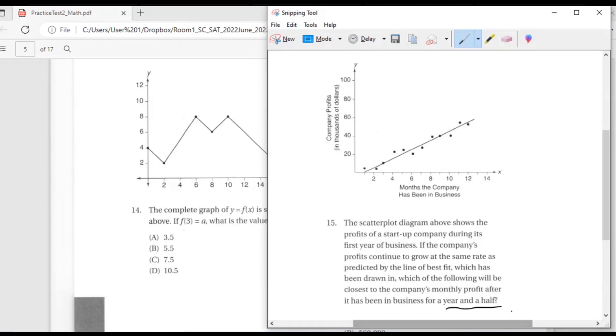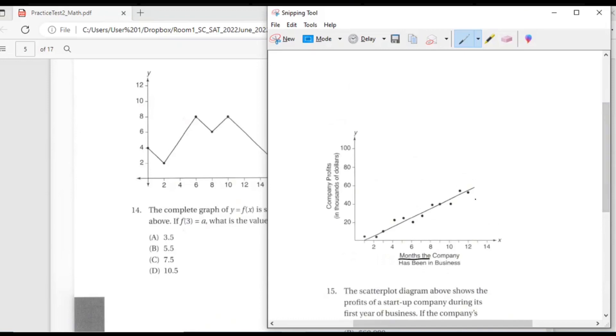Year and a half means how many months? 18 months, right? But in the graph, how many months of data are we given? Only 12 months. That means we have to predict the future when x equals 18. So we need to come up with the equation of a line and then substitute x equals 18 to figure out the corresponding y. Whenever you have a scatter plot like this, pay attention—this is a common SAT type of question where you're given a scatter plot and expected to come up with the equation of a line.